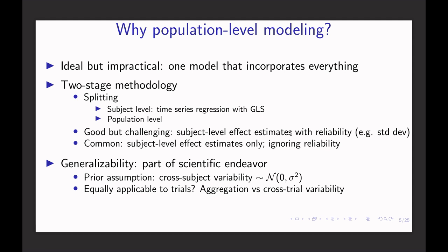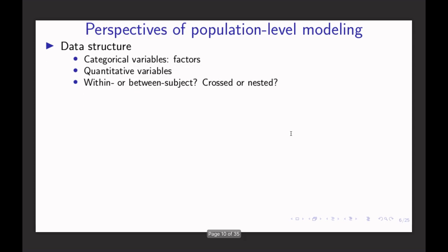A better approach is to model cross-trial variability the same way as we handle cross-subject variability. Ideally, we want to estimate trial-level effects, bring those individual trial beta values to the group level, and build a better model. We treat those trials the same way as we treat subjects — assuming those trials follow a Gaussian distribution.